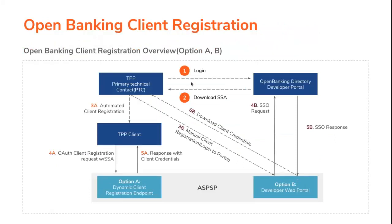The Open Banking Directory acts as a trust anchor, guaranteeing the authenticity of the banks as well as the application providers. Both banks and TPPs can register with the directory. Registrants have to go through a process of verifying their identity. The directory issues digital certificates for message signing and transport level security. TPPs can obtain a software statement assertion from the directory in order to register with the bank. The TPPs can also discover ASPSPs via the directory, where details of registered banks and their available API endpoints are advertised.